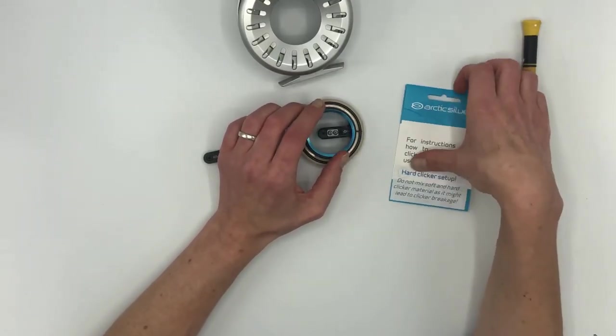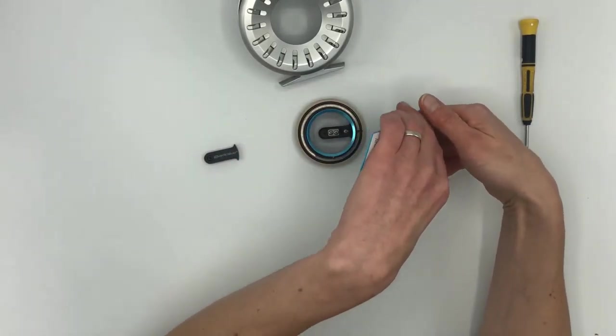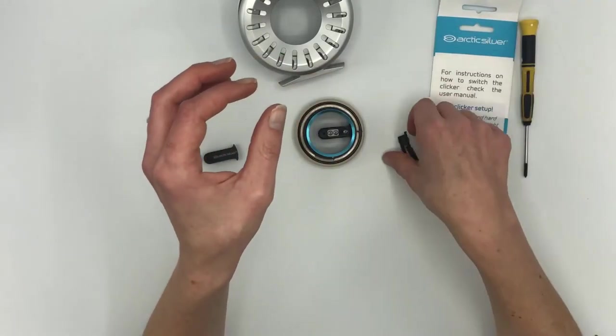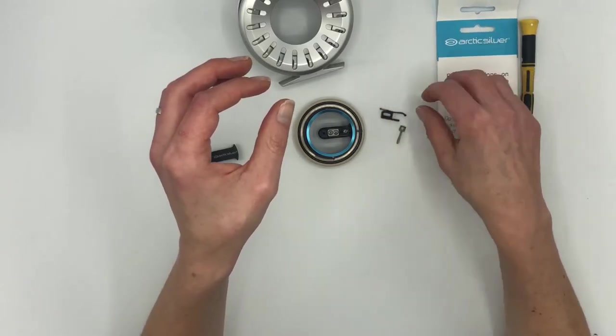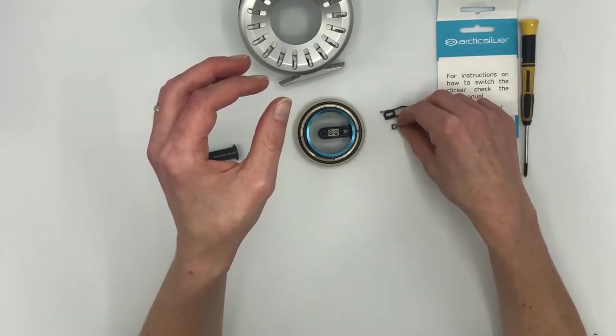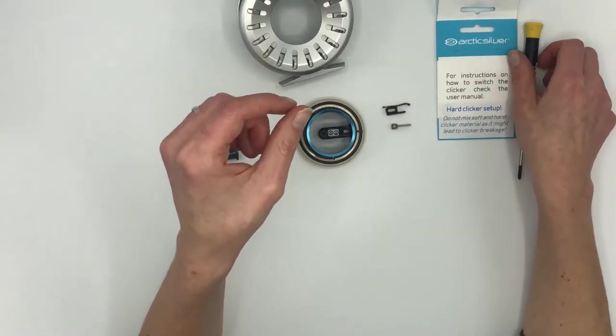If you want to change the whole setup to hard clicker material so you get even more breaking strength, you will also have to change the clicker.